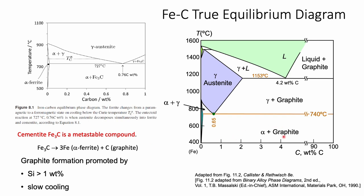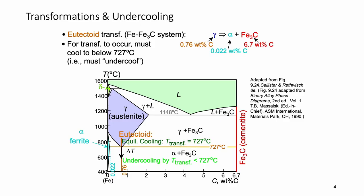That's why we show the Fe-C true equilibrium phase diagram. You may notice on this side we mark as carbon, but we say the final structure is Fe plus graphite. To be clear, for engineering applications — at least for steels — we still focus on the Fe-C phase diagram and we talk about cementite, not graphite.